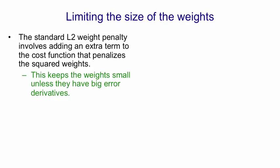This weight penalty keeps the weight small unless they have big error derivatives to counteract it. So if you look at what the penalty term looks like, as the weight moves away from zero, you get this parabolic cost.